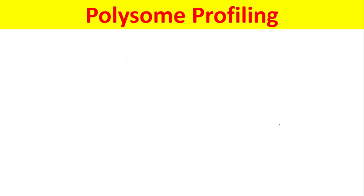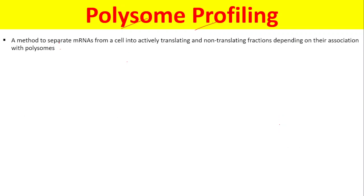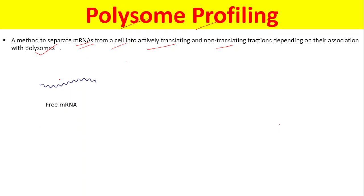In this lecture, I'm going to talk about polysome profiling. Polysome profiling is a method in molecular biology that is used to separate mRNA from a cell into actively translating and non-translating fractions depending on their association with polysomes. In the cell, we have mRNA.